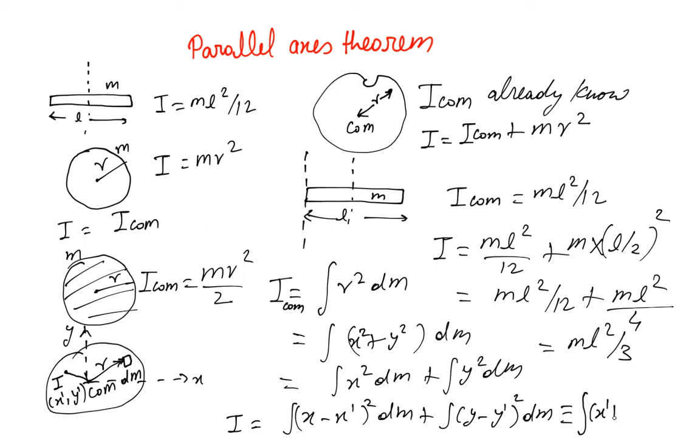This will reduce to ∫(x² + y²)dm plus (x'² + y'²)m. You see this first part here is nothing but I_com, so I will turn out to be I_com plus the second part which is nothing but r²m.